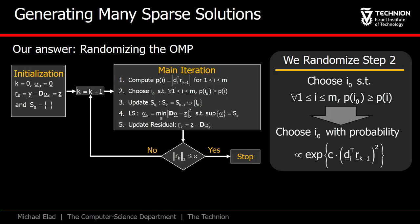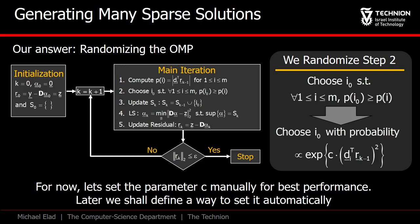Now, let's do things a little bit differently and randomly choose the next atom to join the support. The probability we assign to each atom is directly proportional to the exponent of these inner products. This way, the maximal value has higher chances of being selected, but there is a chance for others to be chosen just as well.